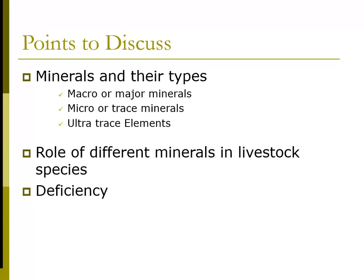Sources of manganese include rice, wheat bran, alfalfa meal, grain byproducts, and distillers solubles. In practice, poultry feed is supplemented with inorganic sources like manganese sulfate, manganese chloride, and manganese carbonate. Manganese is necessary for growth, bone formation, and especially reproduction. It is involved with several enzymes and is related to amino acid transport across the gut.